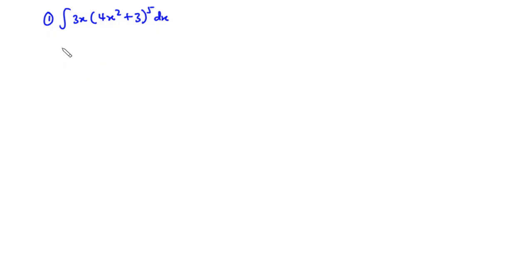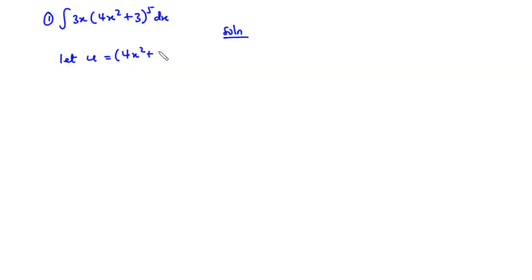Because we are using u-substitution to evaluate this indefinite integral, we are basically going to make u equal to some expression in this whole integral. First of all, we can say that let u be equal to 4x squared plus 3. When deciding to make u equal to an expression, we always think of making u equal to the most complex expression.